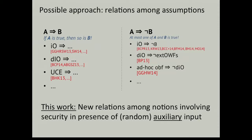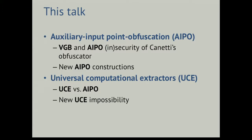This work is to be seen in this context. We're going to study such relations. The common denominator of these results is looking at notions of security that somehow have something to do with wanting to have security in the presence of some auxiliary random input. In particular, I'm going to focus in this talk on two notions. The first one is Auxiliary Input Point Obfuscation, or AIPO for short — a security notion for point obfuscators in the presence of auxiliary input.